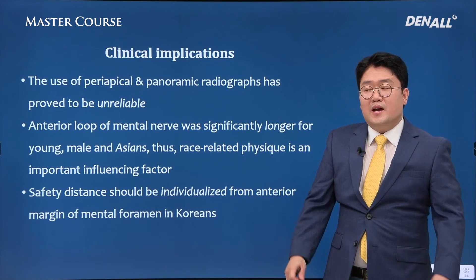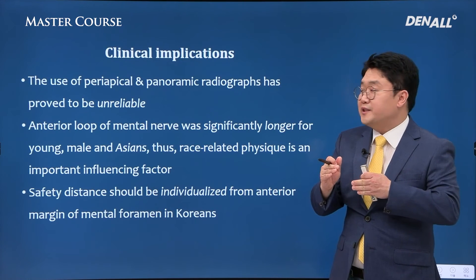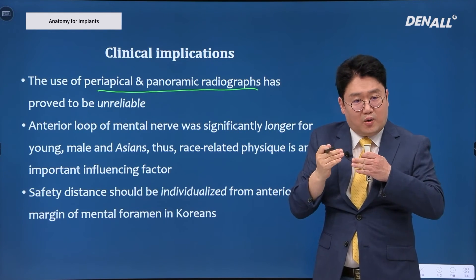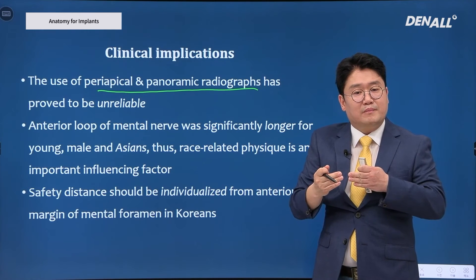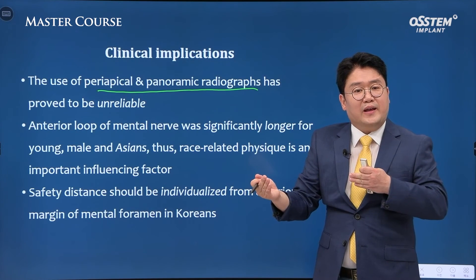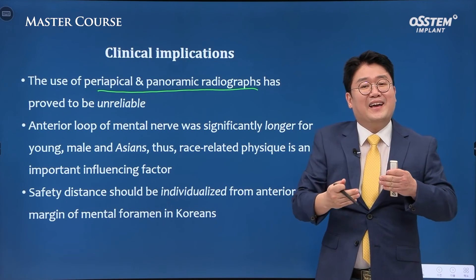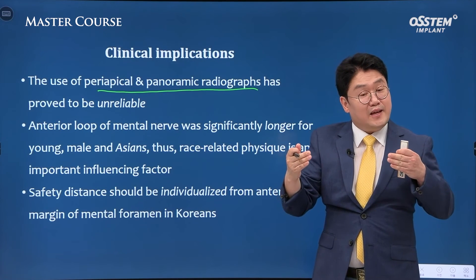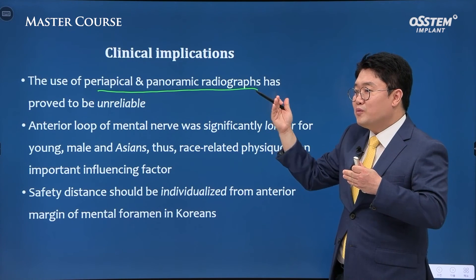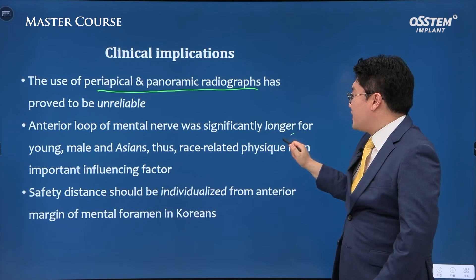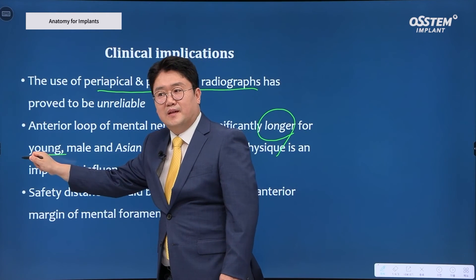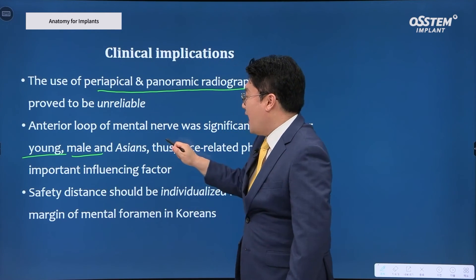Let's summarize. The cadaver dissection studies commonly state that use of periapical and panoramic radiographs has limited value, as cadaver findings are more accurate. The length of the anterior loop shown in periapical or panoramic images tends to be smaller than what is found in cadavers. Anterior loop tended to be longer for younger patients, male patients, and especially in Asians.